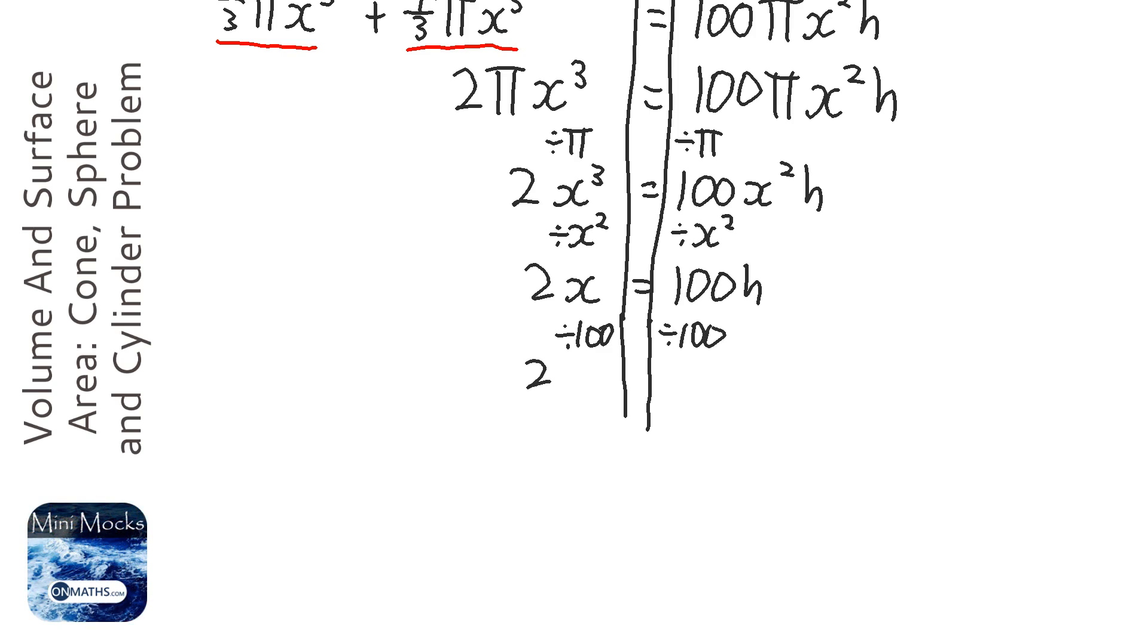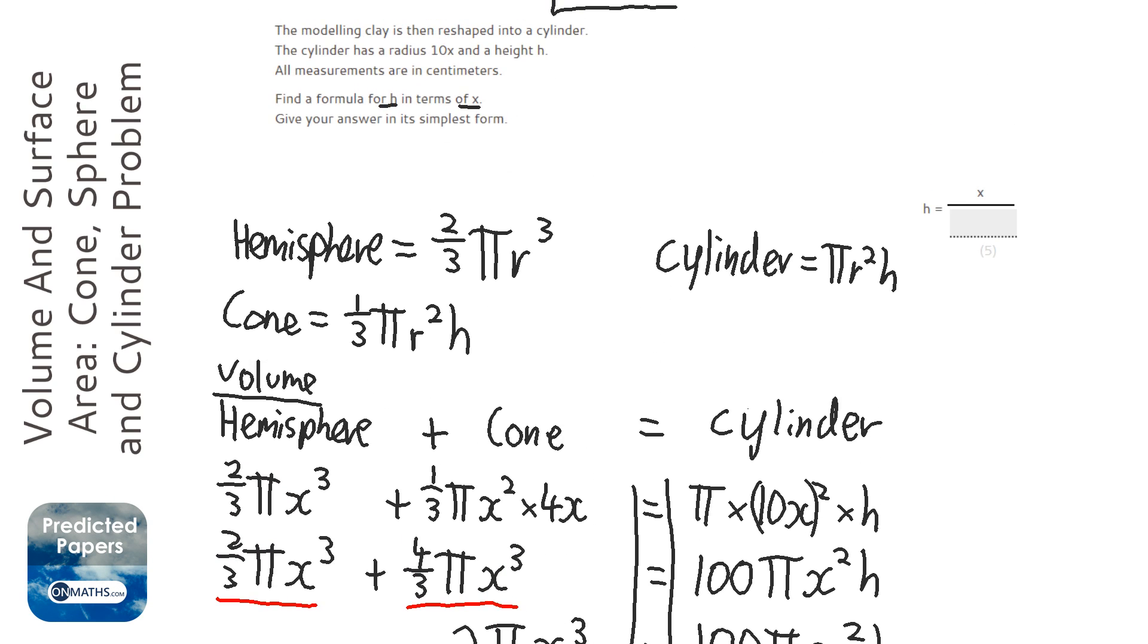And that's going to be 2x over 100 equals h, or h equals, and we can cancel the 2 and the 100, we can divide them both by 2, equals x over 50. So our answer is h equals x over 50.